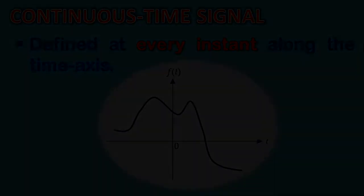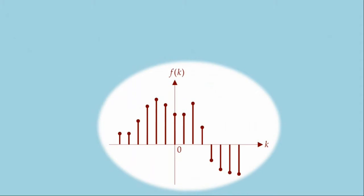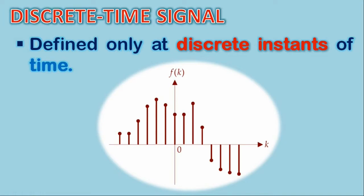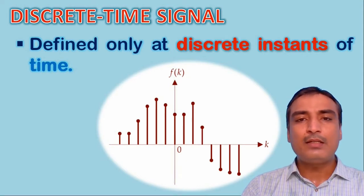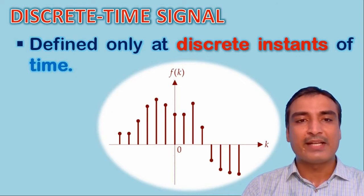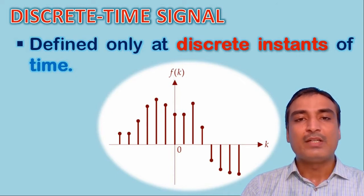On the other hand, look at this illustration. You may notice that the signal is assuming values only at equally spaced discrete instants along the time axis. This is nothing but a Discrete Time Signal, since this signal is defined only at discrete instants of time. So, a signal which is defined only at discrete instants along the time axis is known as the Discrete Time Signal.